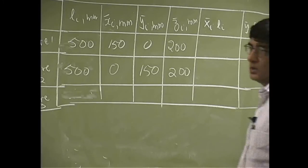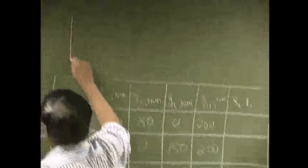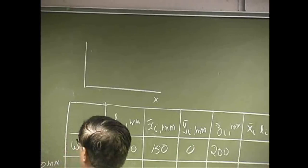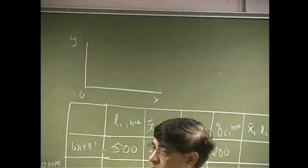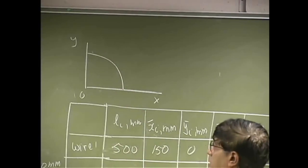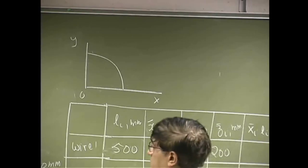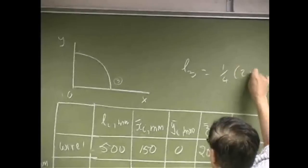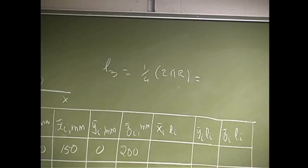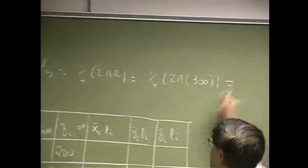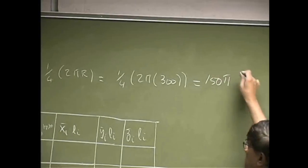That takes care of wire 1 and wire 2. Then we're going to look at the third wire, which means we're looking at the x-y plane. Looking down at it in the z direction, it's going to be a circular arc with radius 300. L3 is going to be one-fourth of 2πr. 2π is the total circumference; you take one-fourth of that. So with r = 300, that gives you 150π millimeters.